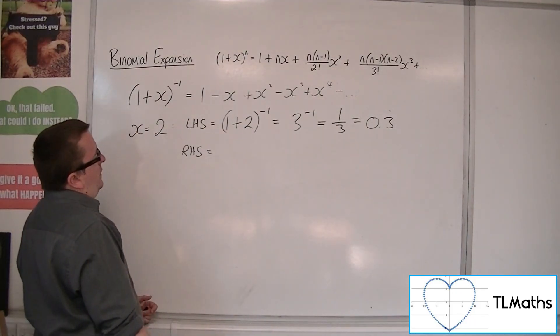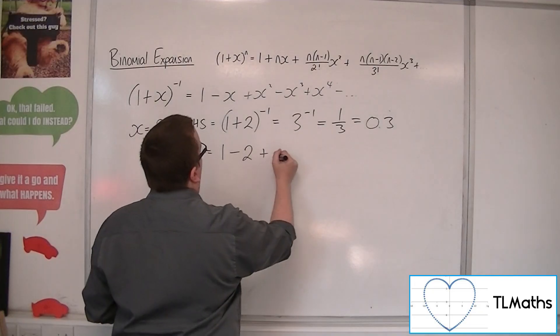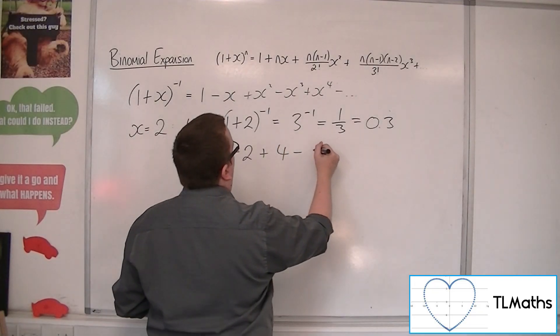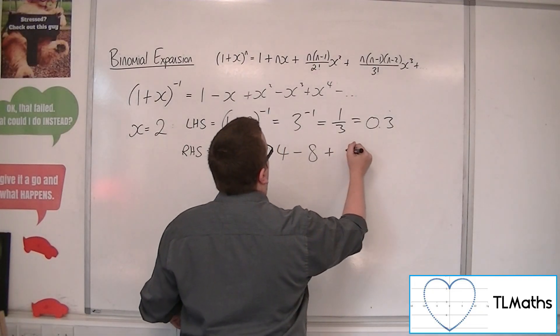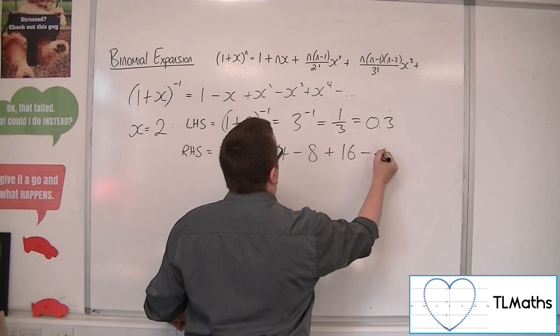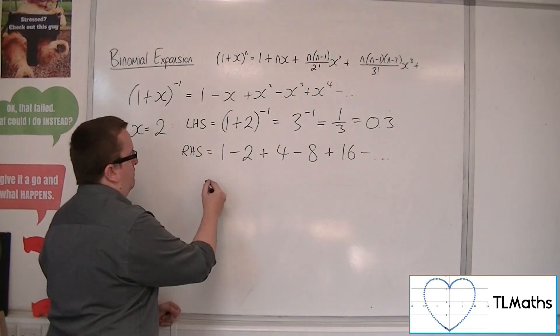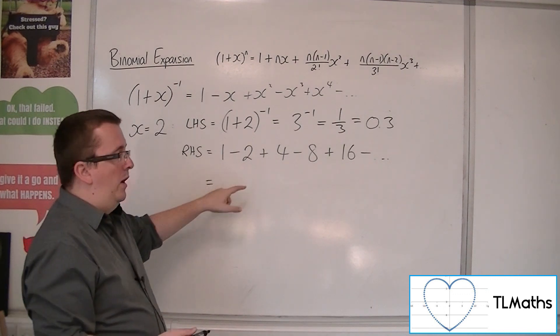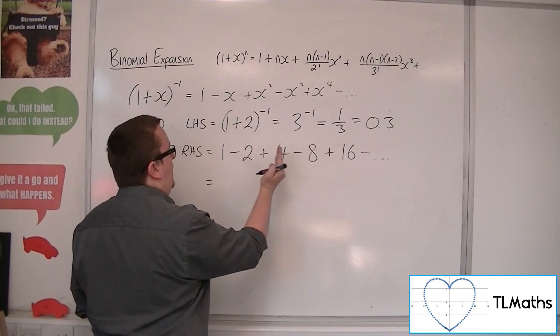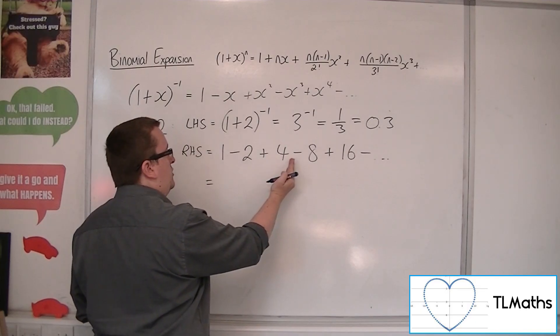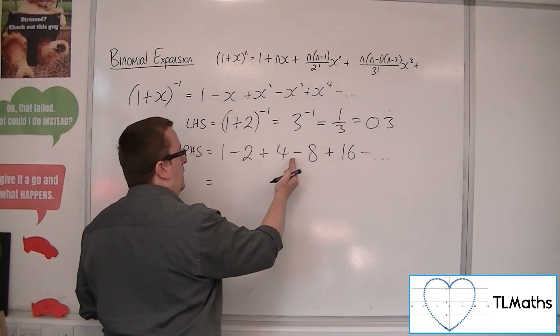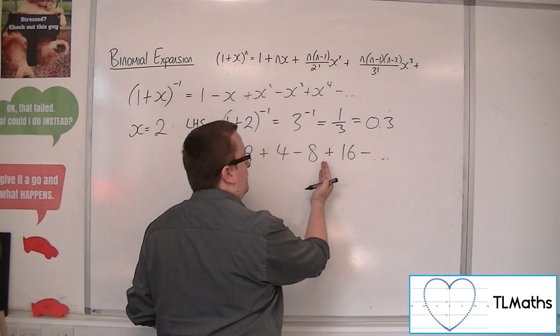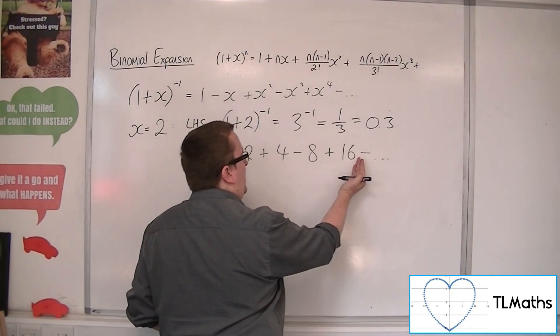Now, the right-hand side would be 1 take away 2 plus 2 squared, take away 2 cubed, plus 2 to the 4, take away etc. So, 1 take away 2 is minus 1. Add 4, gets you to 3. Take away 8 is minus 5. Add on 16, you get to 11.